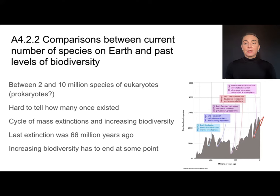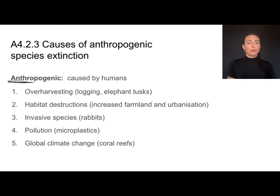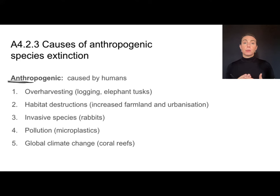We're currently in a cycle of increasing biodiversity, but this pattern of increasing extinction has to end at some point. One of the biggest differences between the next mass extinction and previous ones is that it's anthropogenic in cause — meaning caused by humans. This can be due to over-harvesting and poaching, habitat loss, invasive species causing extinction of endemic species, pollution, or global climate change.